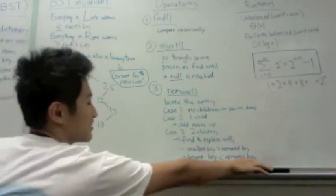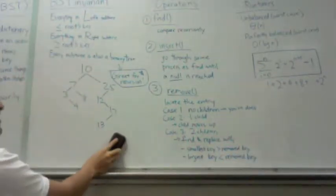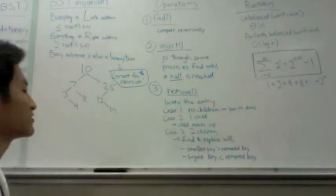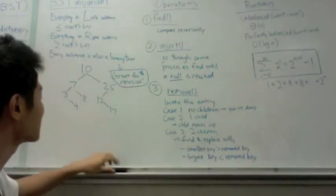it's simple. You're done. So if you just wanted to remove 13, just remove it. For case two, if you have one child, the child moves up. So let's say I wanted to remove 12.